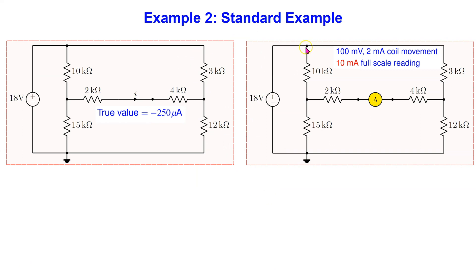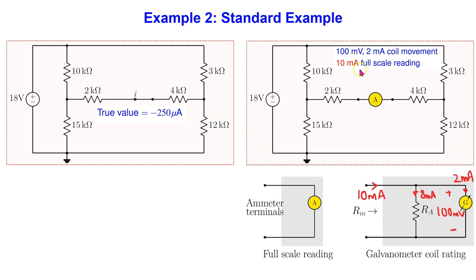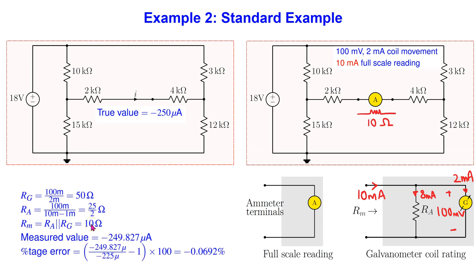Next, let's consider an average or standard difficulty example from a circuit analysis perspective. We are interested in measuring the current in the center branch of a bridge circuit. Using circuit analysis, it can be shown that the true value is minus 250 microamp. The minus sign means that in reality the current is flowing in the opposite direction to the one shown. To measure this current, we interrupt the circuit and insert an ammeter into the circuit as shown. The ammeter specifications are given, and we can analyze the ammeter as before and obtain the effective meter resistance.